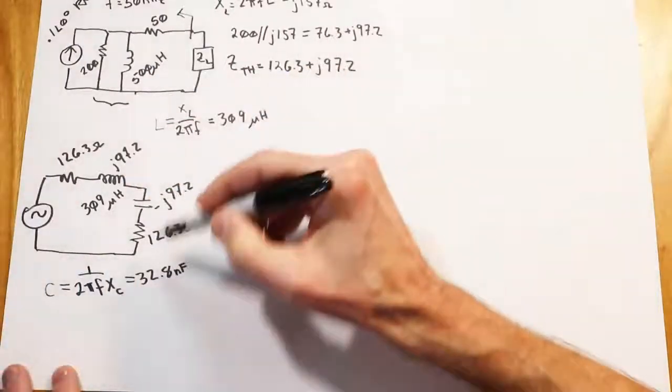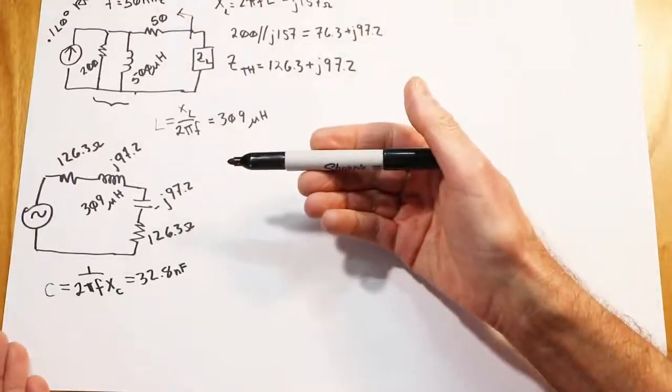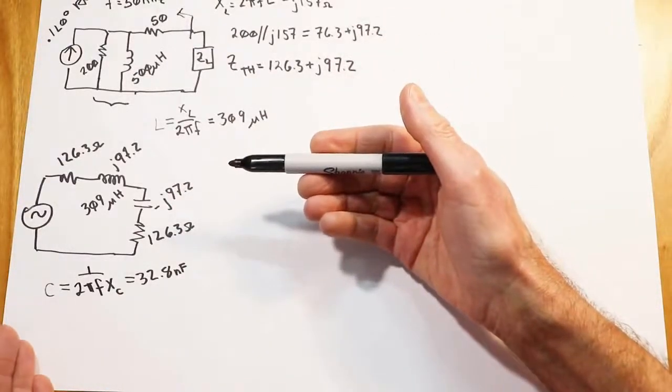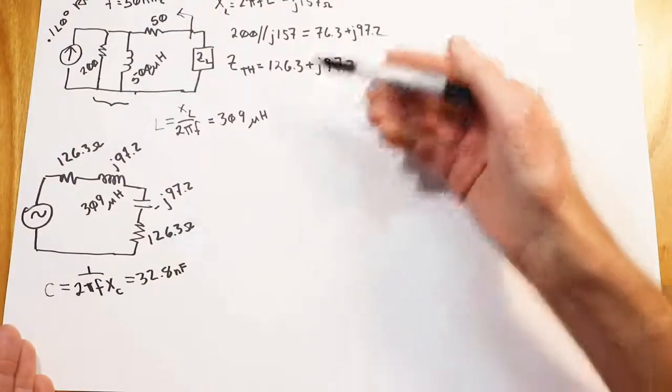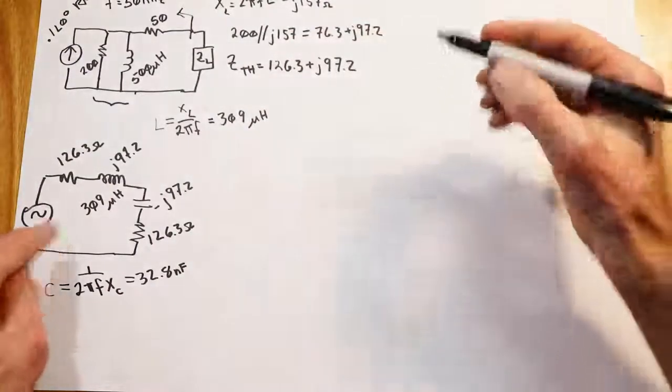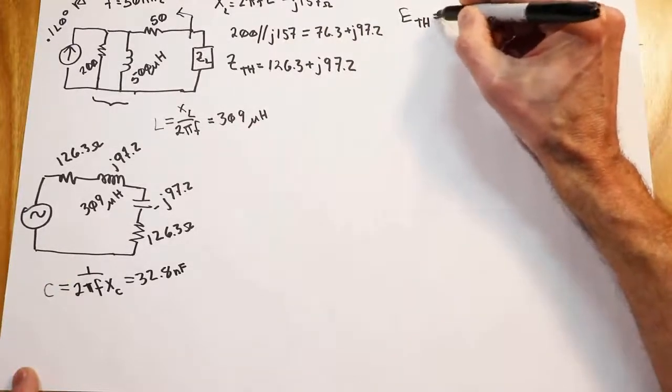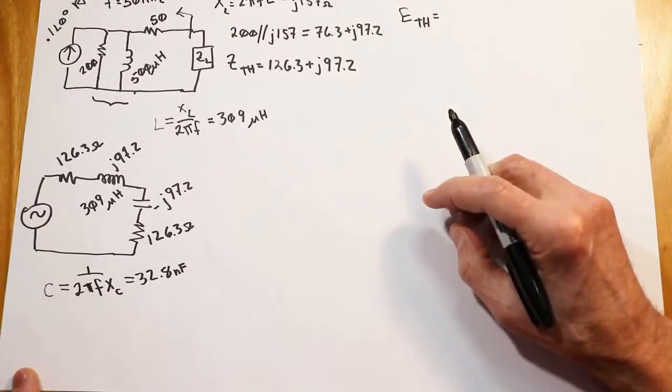That part of it's done. In other words, we know what the load has to be to get maximum power. We don't really know what the maximum power is yet. We have to do a little bit more. One of the things we have to do is complete our Thevenin equivalent. We have to find out what E-Thevenin is. What do we get for that thing?